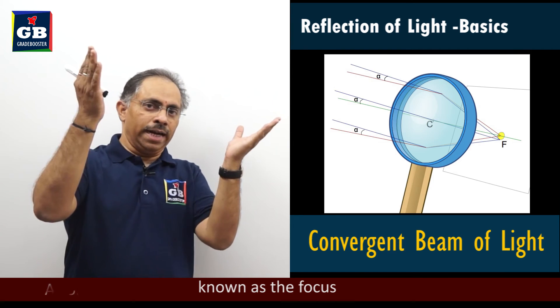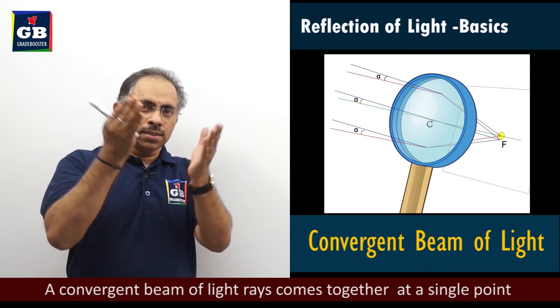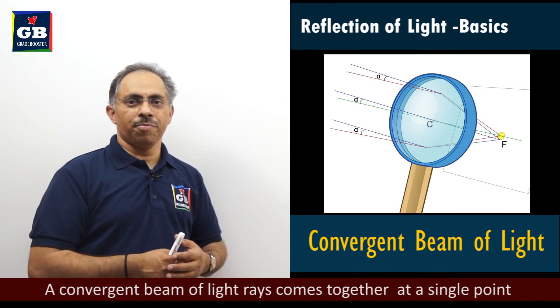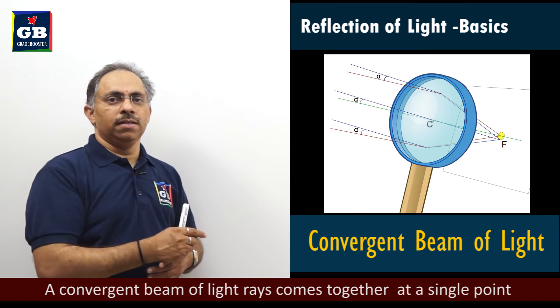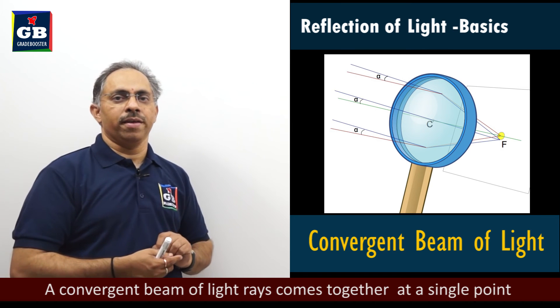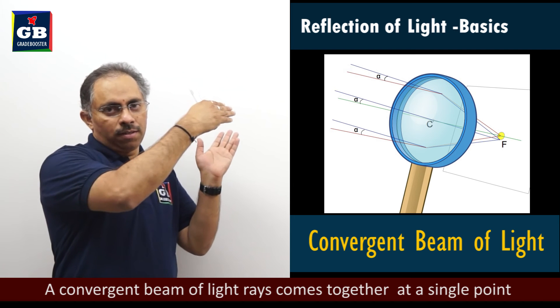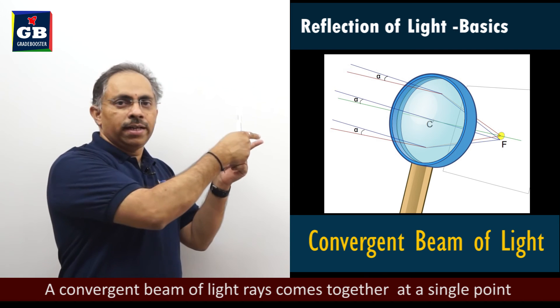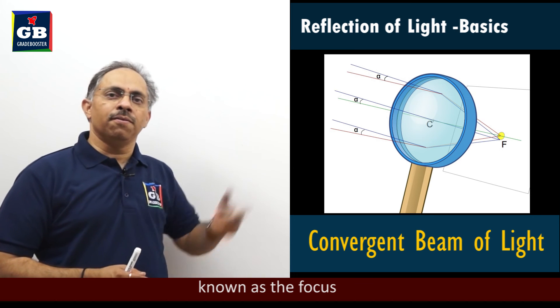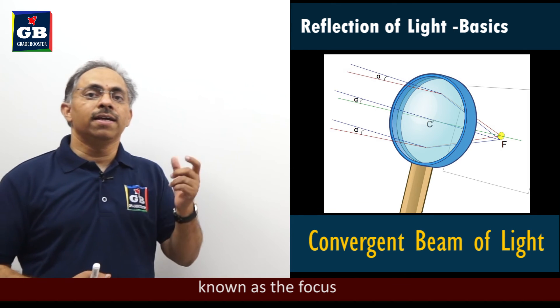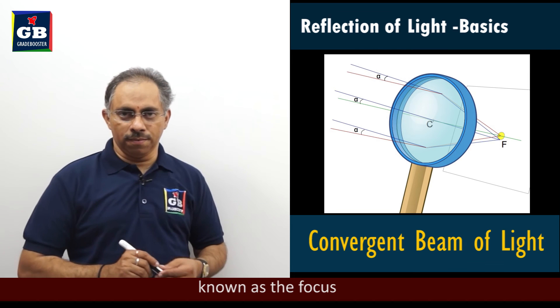It is like different light rays coming towards a common point like this. So here you can see that different light rays are there coming towards a common point. So they are coming from different directions, but finally passing through a single point. Such a beam of light, we will call it as a convergent beam of light.